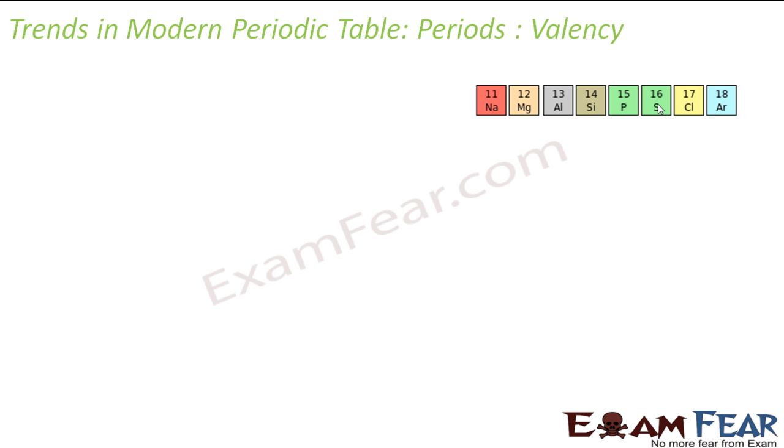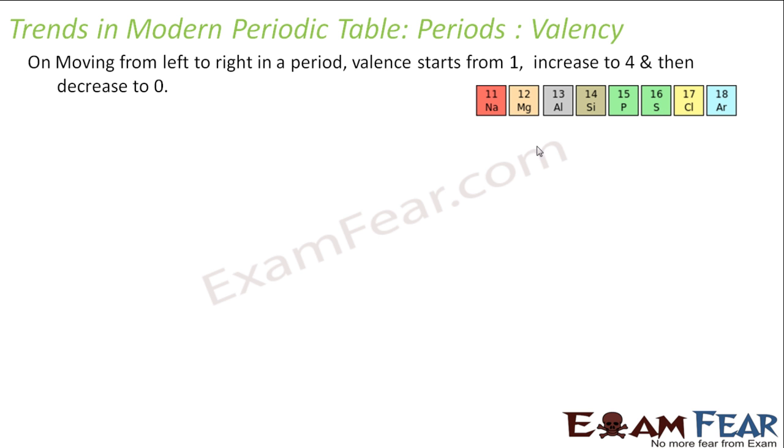If you talk about valency, if you see that the valency increased from 1 to 4 and then decreased. So, valency is the extra electron which it can have or it has or it can take. So, sodium has 1 extra electron, valency is 1, magnesium, 2 extra electrons, aluminium, 3 extra electrons, silicon, 4 extra electrons, phosphorus needs 3 electrons, so this valency is minus 3. This guy is minus 2, this is 0.